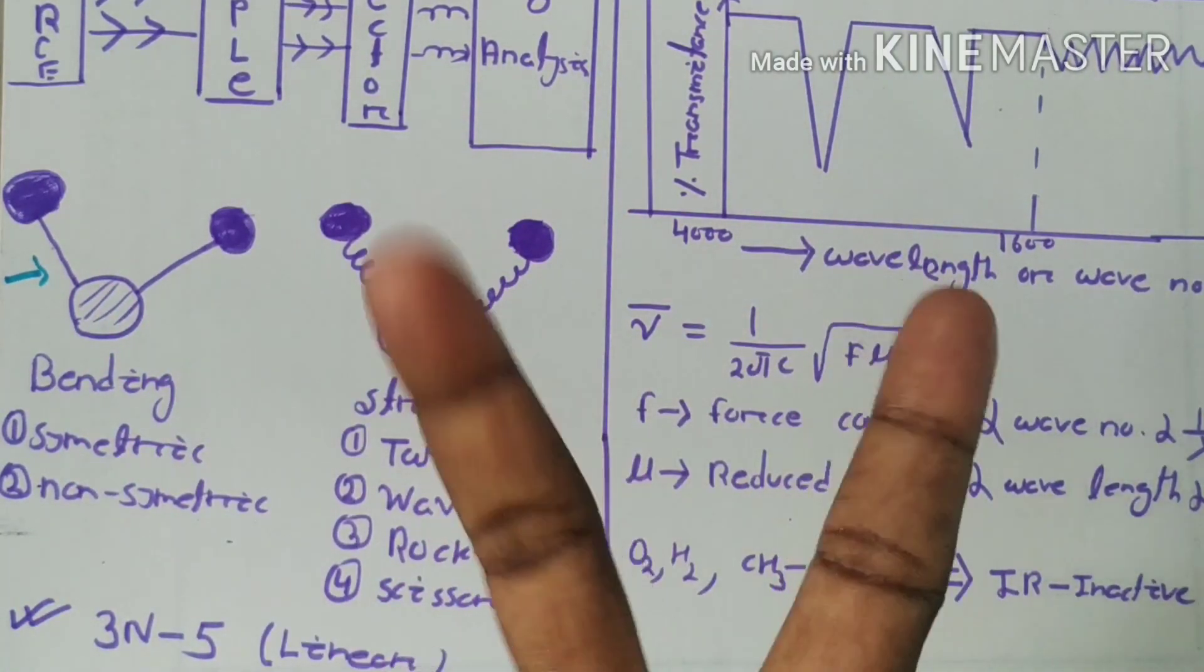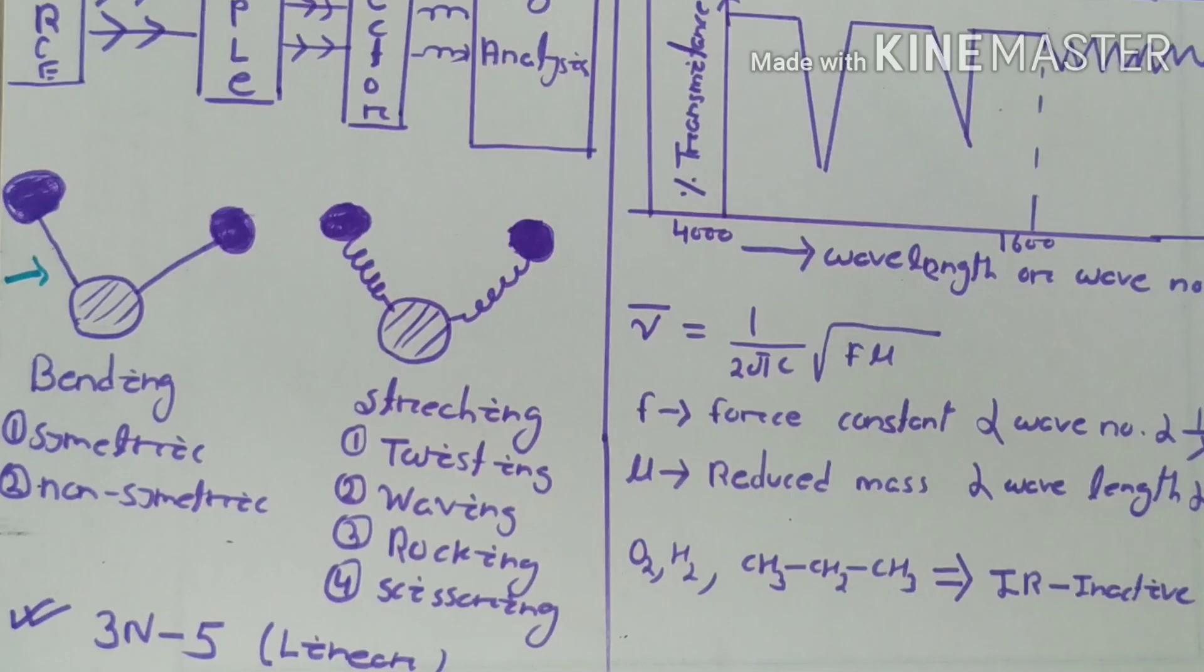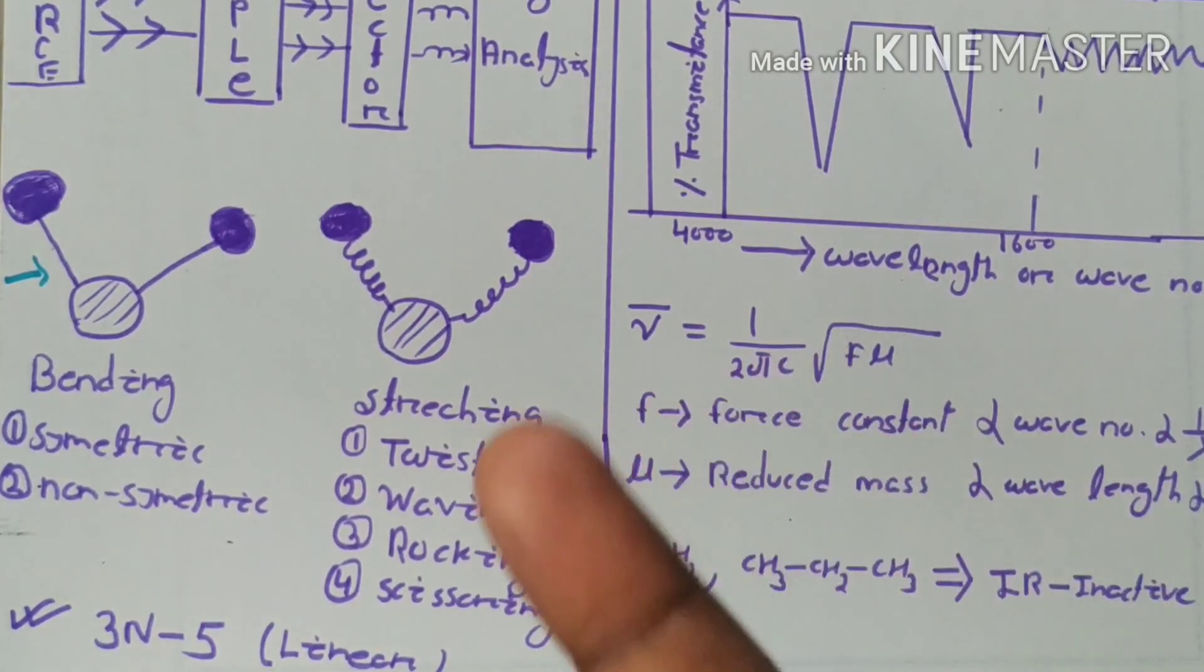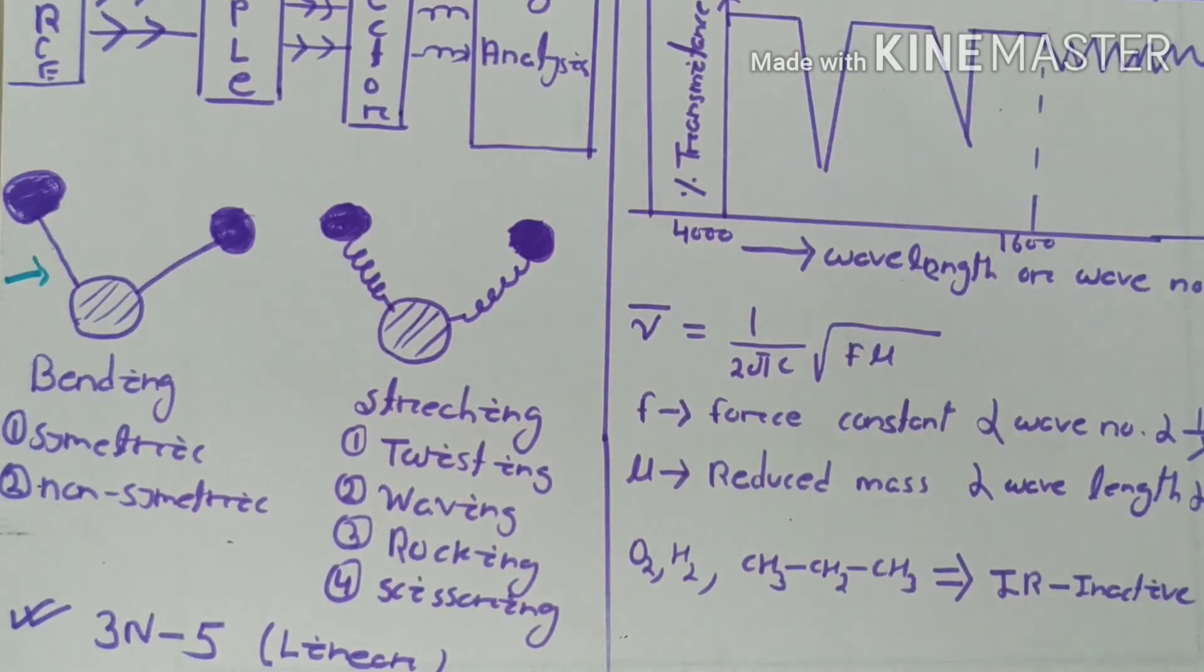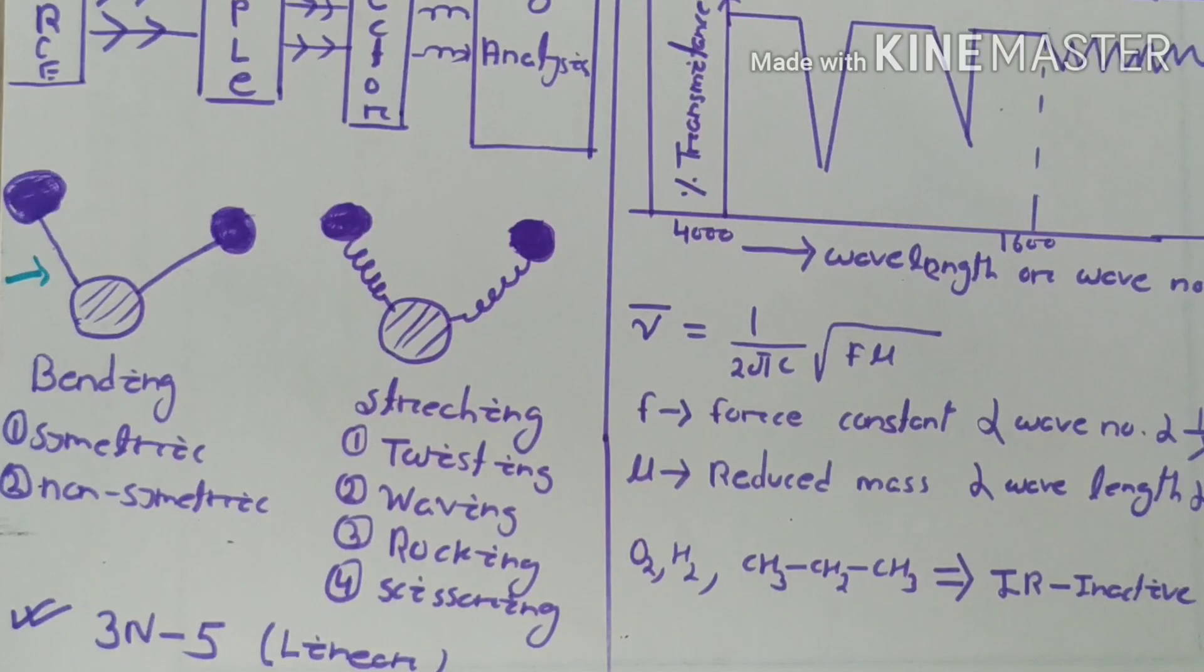The bending of the molecule can be of two types: symmetric and asymmetric. If both molecules are bending the same way, this is symmetric. If they're different, it is asymmetric.